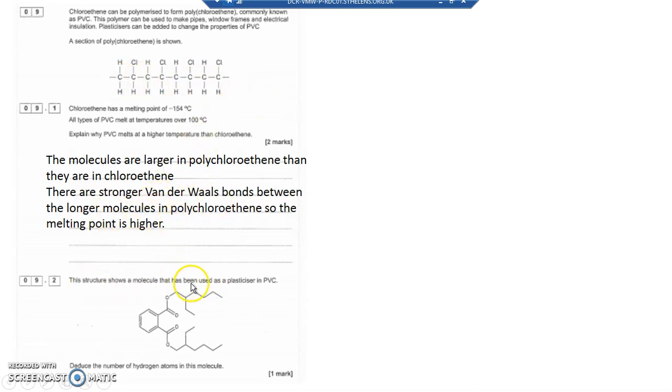The structure shows a molecule that has been used in PVC. Deduce the number of hydrogen atoms in the molecule. What you've got to do is recognize every carbon's on a corner. There's carbons on each of these corners and the hydrogens have been left off, but every carbon has four bonds.